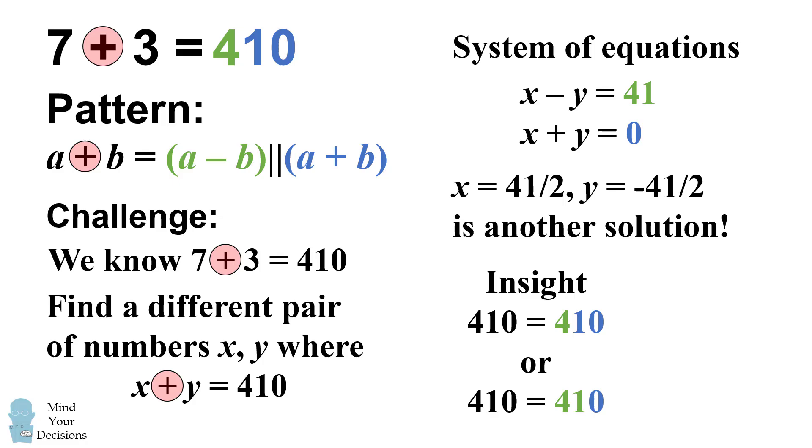This ends up with the solution that x is equal to 41 over 2, and y is equal to negative 41 over 2. And this yields another solution. So 41 over 2 and negative 41 over 2 will also combine to be 410.